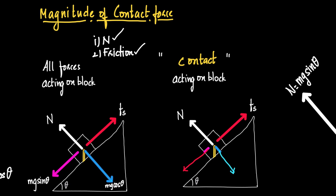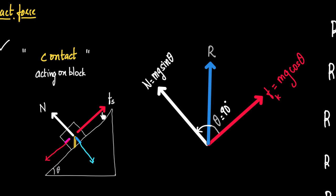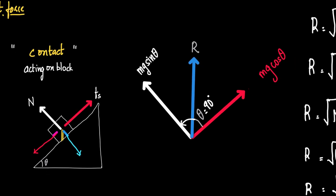Therefore, all we need to do is consider only the two contact forces: normal reaction and friction. Normal reaction can be replaced by mg cos theta, and kinetic friction can be replaced by mg sin theta. These two contact forces act in perpendicular directions, so there would be a resultant. The angle between normal reaction and kinetic friction is 90 degrees.